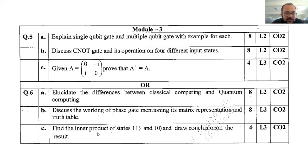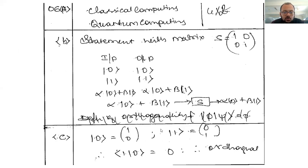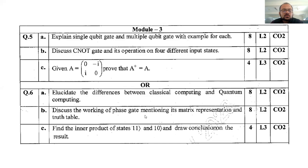Question number six C: Find the inner product of state 111, state 10 and draw the conclusions on the result. So you proceed accordingly. Definitely you can score good marks. All are very simple. It will be required for your branch related also.